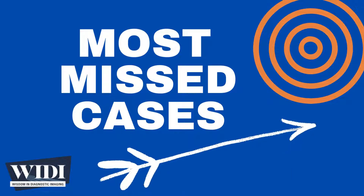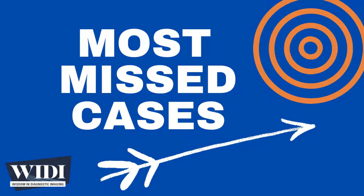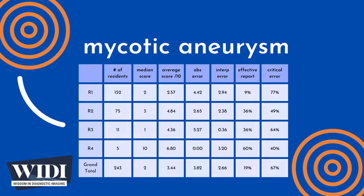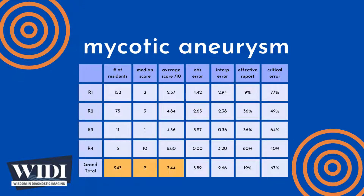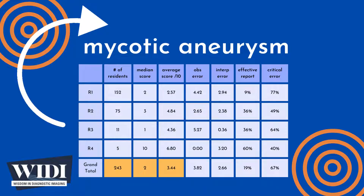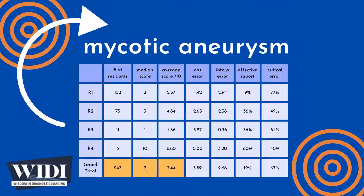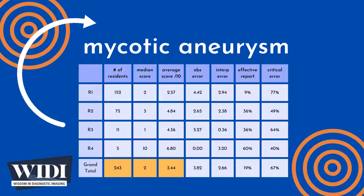Over the last 10 years, the Department of Radiology at the University of Florida College of Medicine has conducted a simulation-based evaluation of radiology resident competence in critical care imaging. 243 residents interpreted this case of mycotic aneurysm as one of 65 cases during an eight-hour simulated on-call shift, with a median score of 2 out of 10 and an overall average score of 3.44 out of 10.